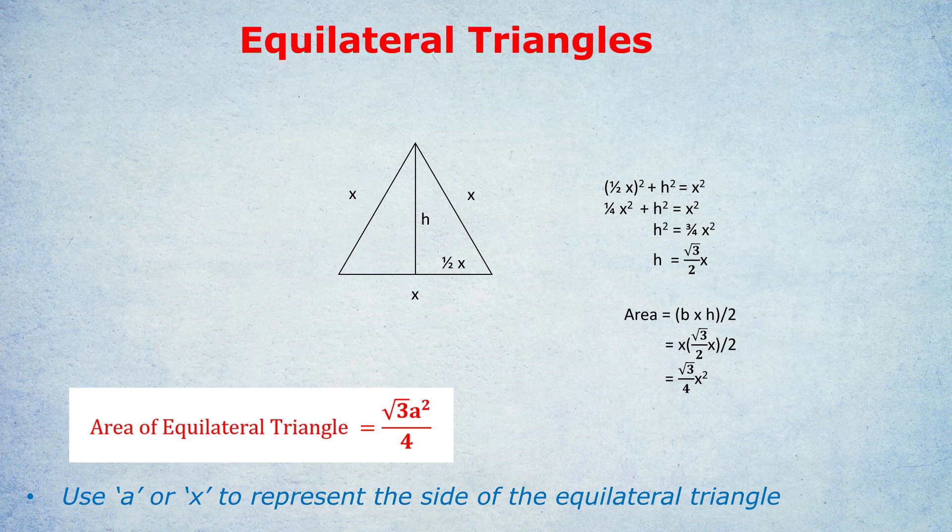So base x, as you can see there in the brackets, times the height root 3 over 2x, divided by 2. x times x becomes x², and over 2 divided by 2 becomes over 4. You could think of the divide by 2 at the end as being like multiplying by a half, so the denominator becomes 4.